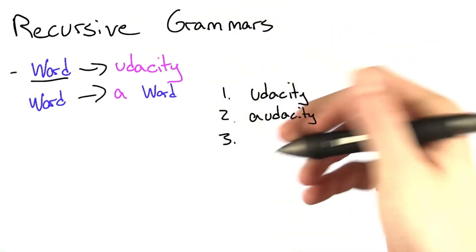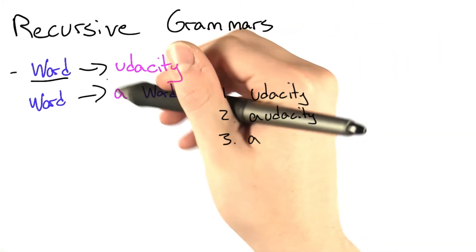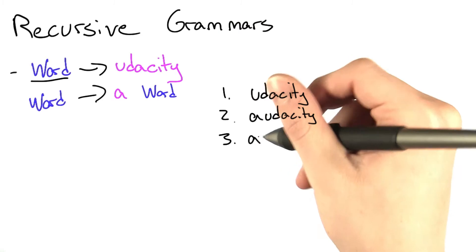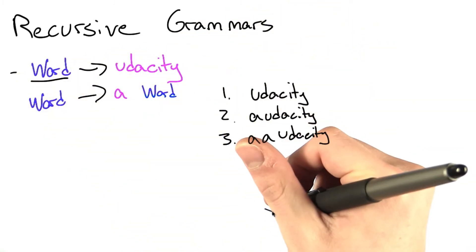We can do the same thing, but twice. So we have A, then instead of going to Udacity, we do A again, and then we do Udacity. And the way this is breaking down kind of looks like this.